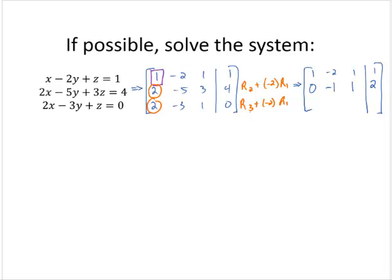Now taking row 3 and adding negative 2 times row 1. 2 plus negative 2 times 1 is 0. Negative 3 plus negative 2 times negative 2 would be positive 1. 1 plus negative 2 times 1 would be negative 1. And 0 plus negative 2 times 1 would be negative 2.